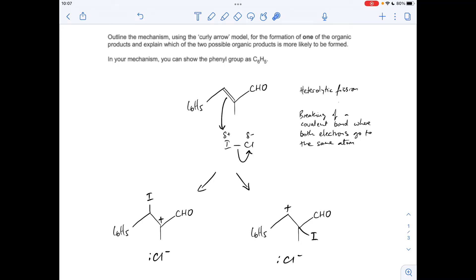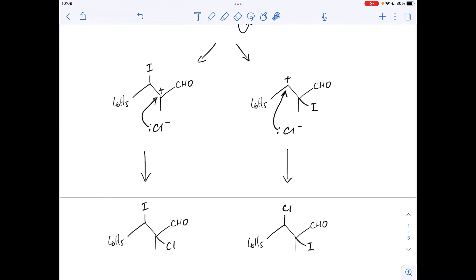So the final part of the mechanism is a pair of electrons from the Cl minus ion attracted to the carbon with the positive charge, and that would lead to the formation of this product and this product.